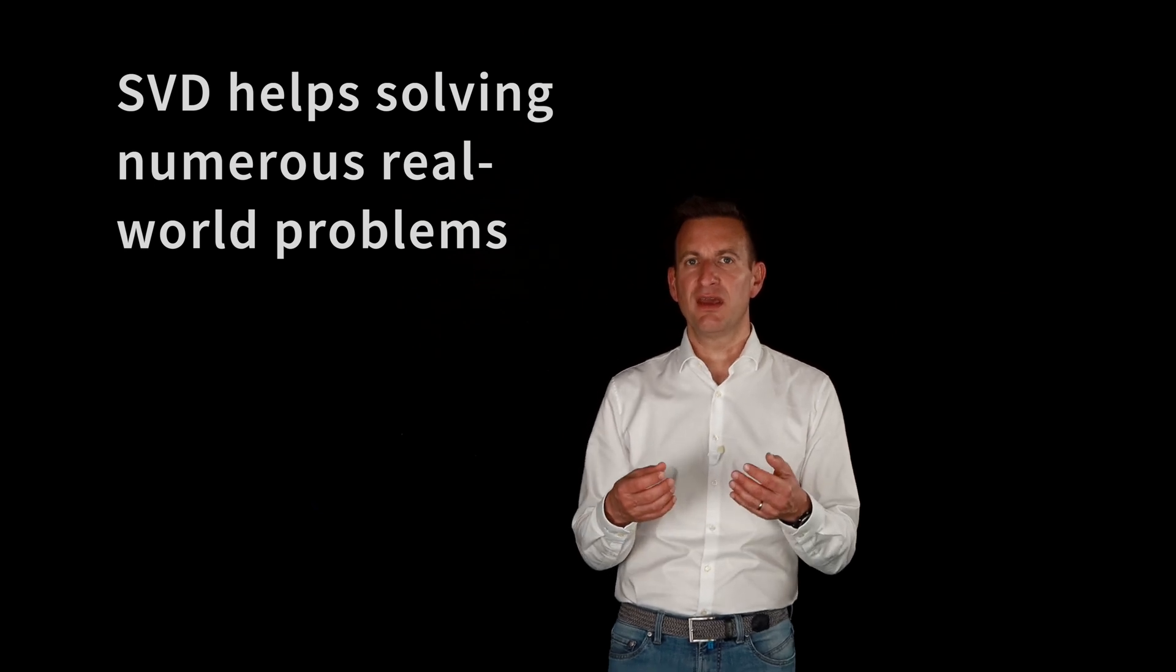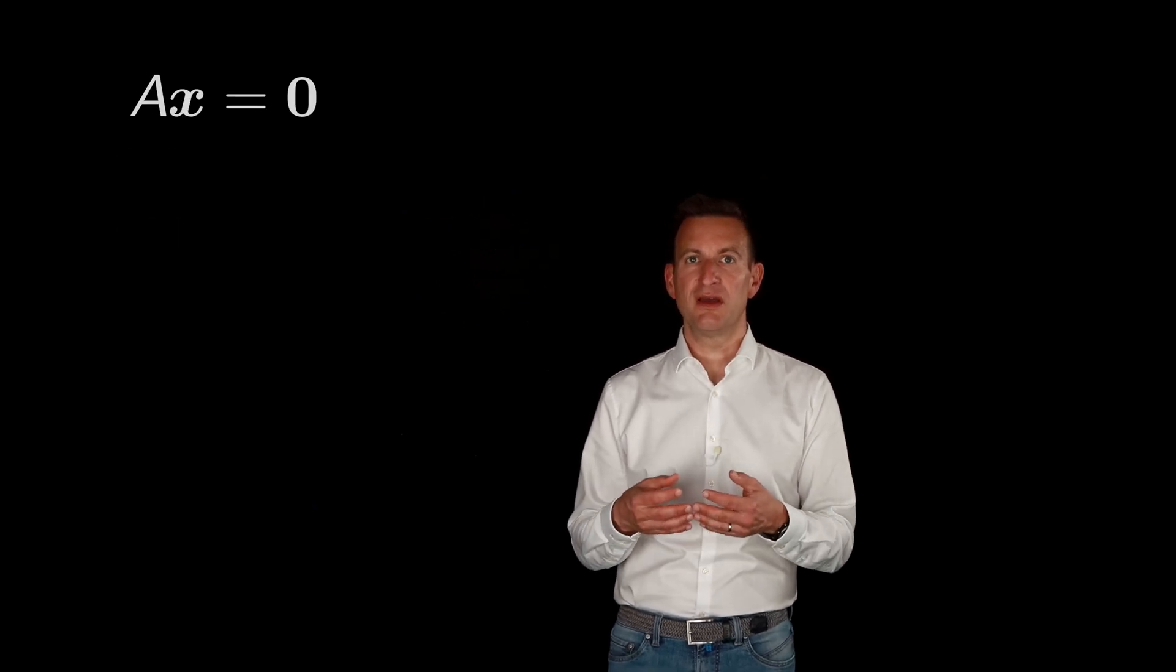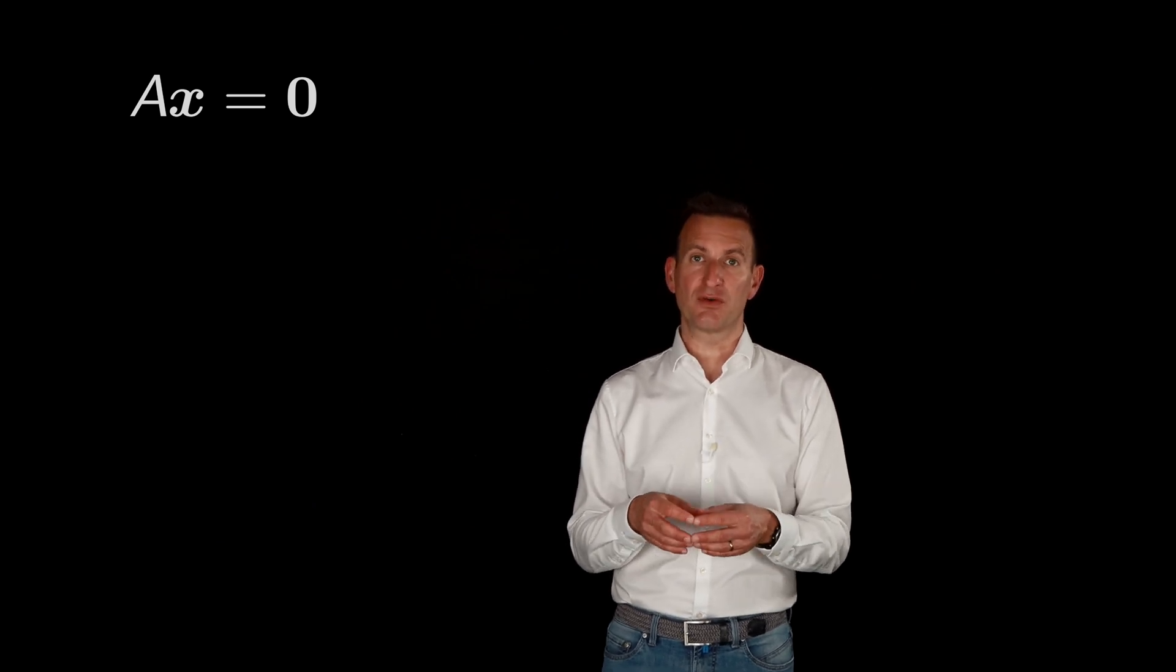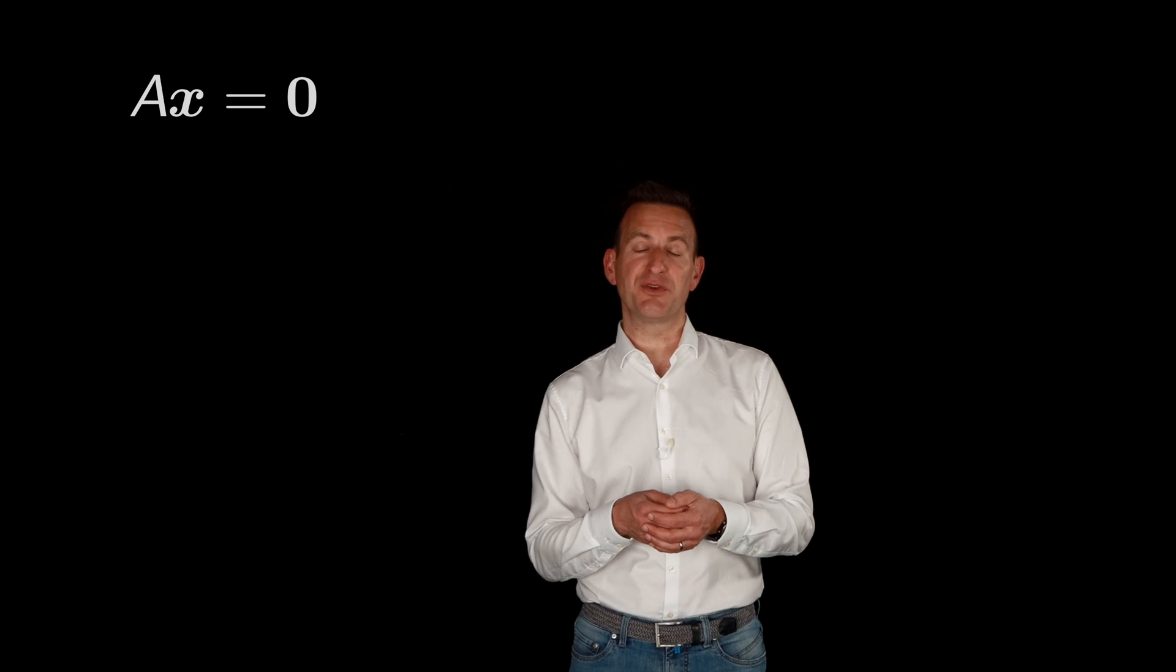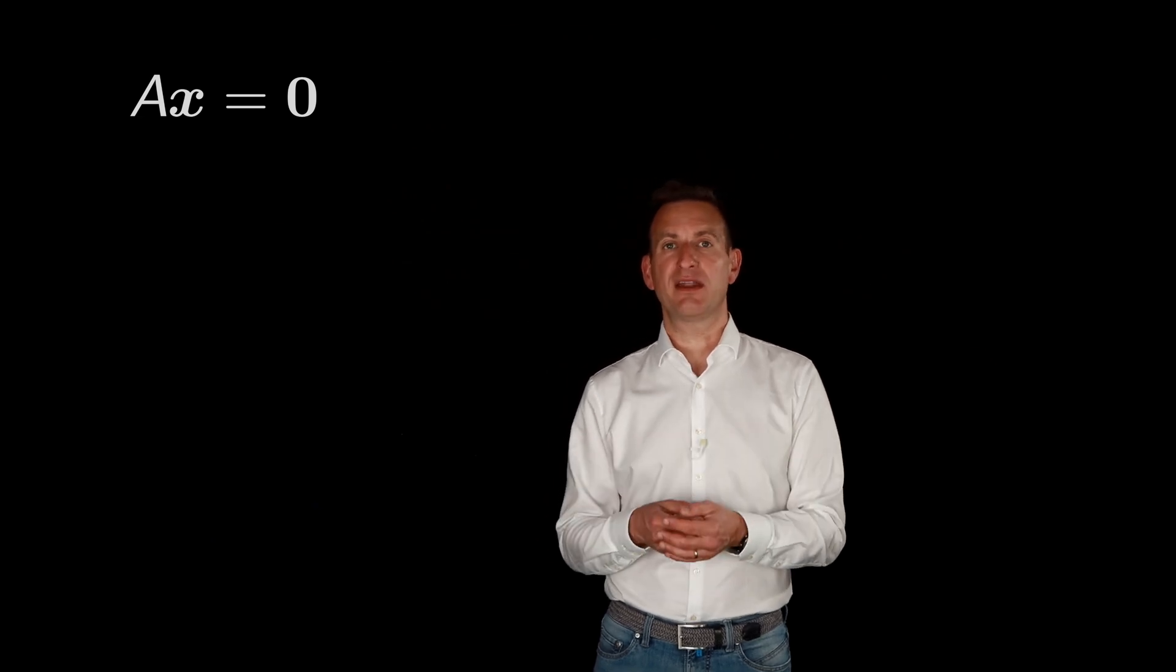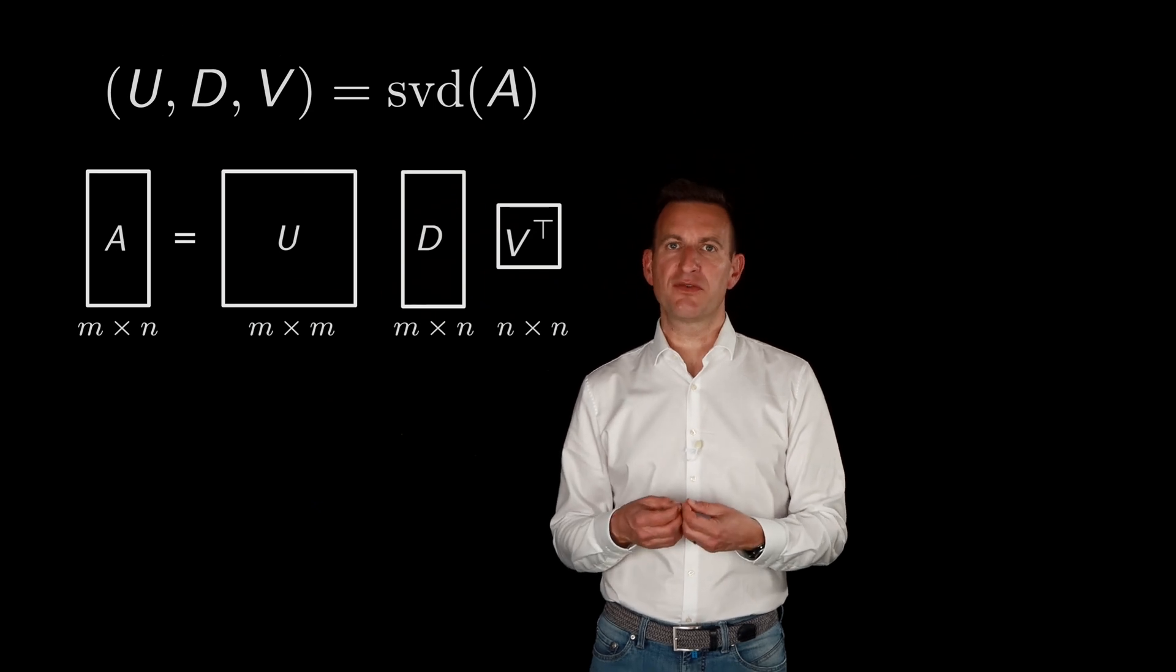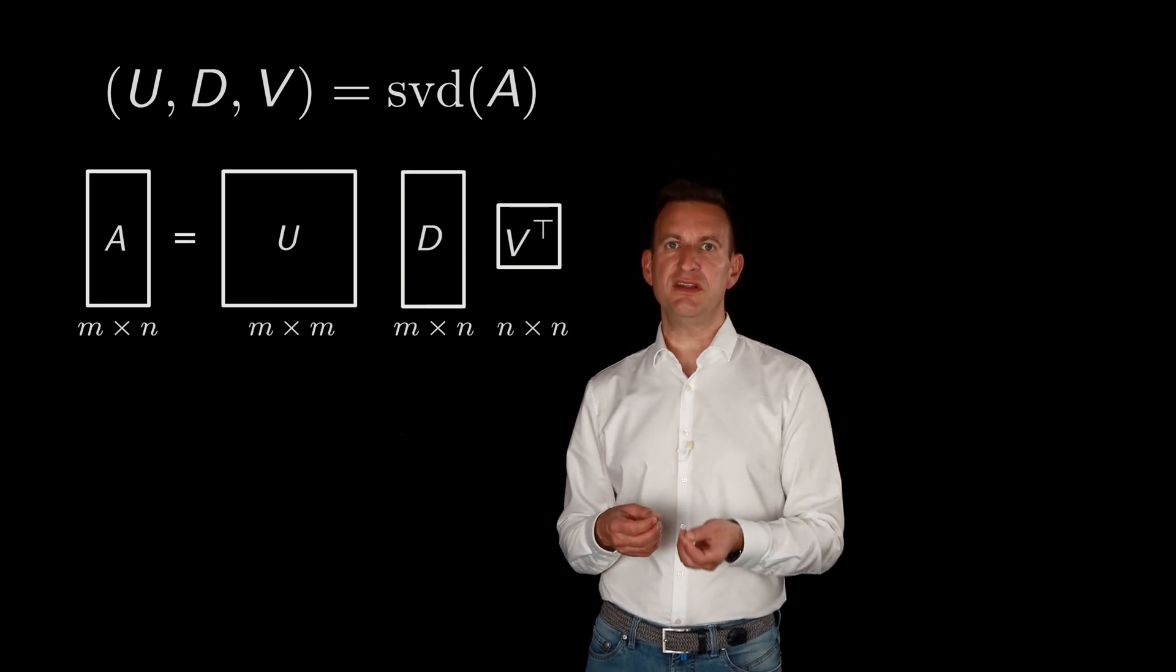As I said before, for example, using it to compute the solution to a linear homogeneous equation. So if you want to solve AX equals zero, except for the trivial solution X equals zero, how can we do that? So what we do, we take this matrix A and decompose it into the three matrices U, D, and V.